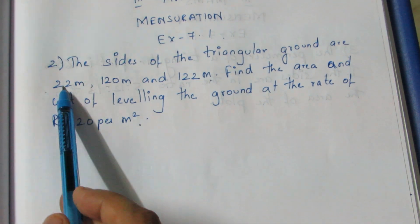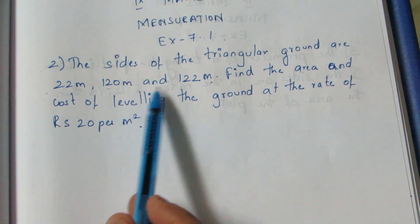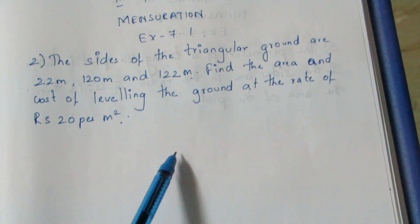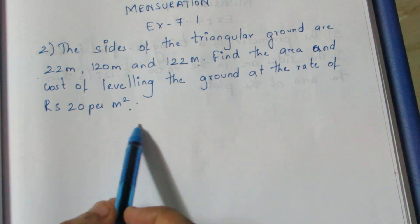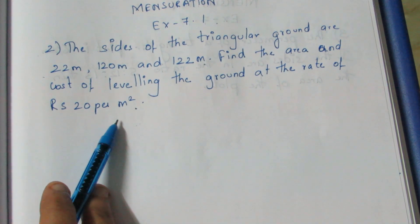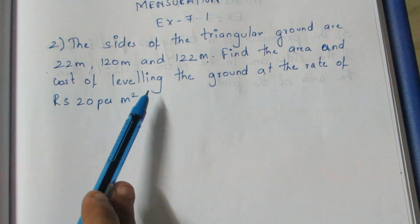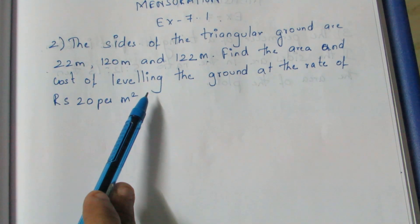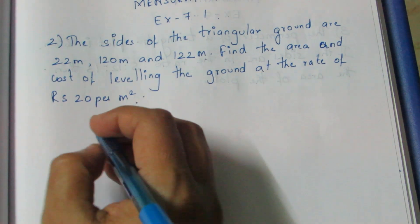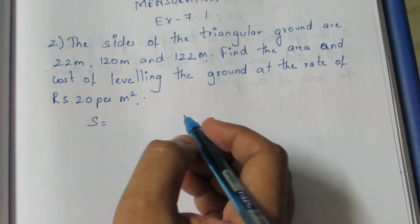When we are given the three sides, we can use the area of a triangle formula. We use Heron's formula to find the area of the triangle.